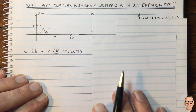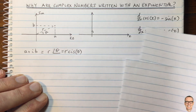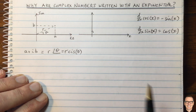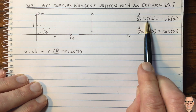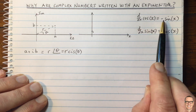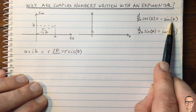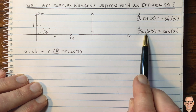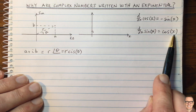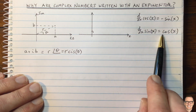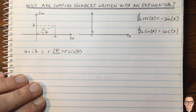To get to that, let's think about some well-known properties of cosine and sine. The derivative of cosine equals negative sine, and the derivative of sine equals cosine. We'll come back to those in a minute.